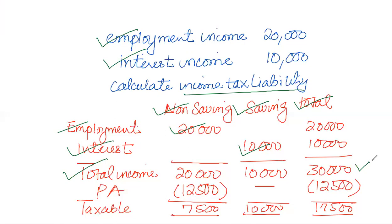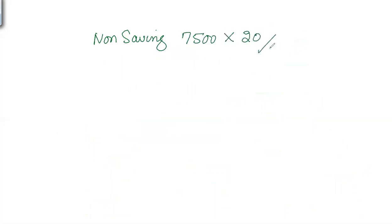As total income is below £100,000, personal allowance of £12,500 is eligible. Remember that personal allowance is to be applied first from non-saving income, then from saving income, then from dividend income — the sequence is very important. So non-saving taxable income is £7,500, taxable saving income is £10,000, total taxable income is £17,500. This shows the person is a basic rate taxpayer. The non-saving income of £7,500 is taxed at 20%, resulting in £1,500.